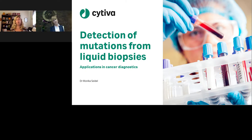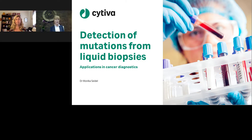Is blood always the best type of input sample for cancer detection? It depends on the cancer type, stage, and tumor location. There are particular types of cancers not well suited for detection in blood — for example, bladder and prostate cancer, where urine appears to be a more suitable sample. For brain cancer, cerebrospinal fluid may be more suitable.